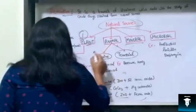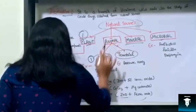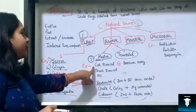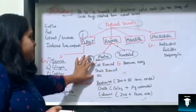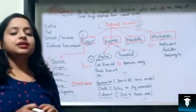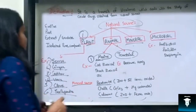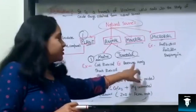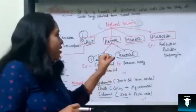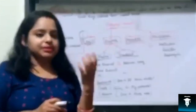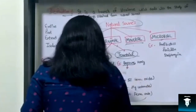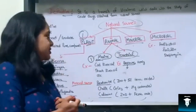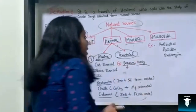Coming to examples of animal sources, first I have taken Cod liver oil and Shark liver oil — both drugs are used in the deficiency of vitamins A and D, and are used in rickets. Second, drugs obtained from insect sources: Beeswax and Honey — beeswax is obtained from the honeycomb and is used as an ointment base, as an emulsifying agent, in dental industries, and in impression plasters; while honey has antimicrobial and wound-healing properties.